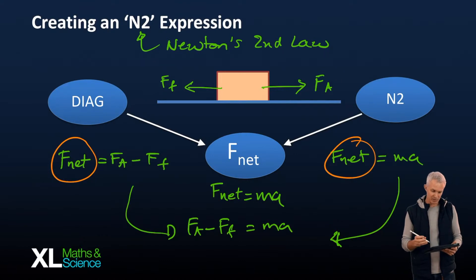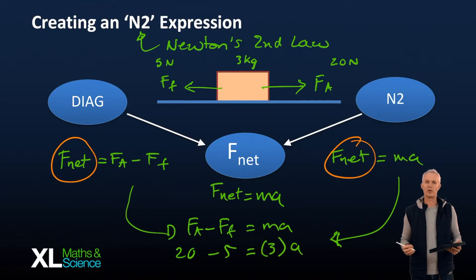Now if we've got values, like in this case we had 20 and 5 and let's call it a 3kg object, then you could put all that in and say 20 minus 5 equals 3 times A and away you go. So that's the simplistic view of putting together the diagram information and Newton's second law to give ourselves a mathematical expression.